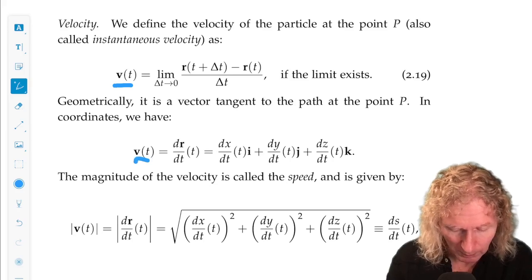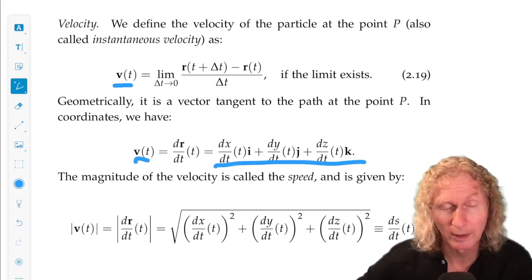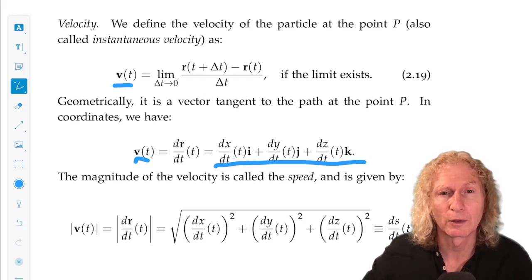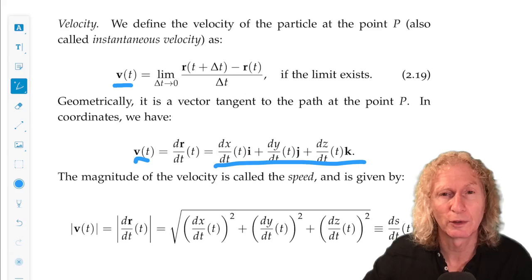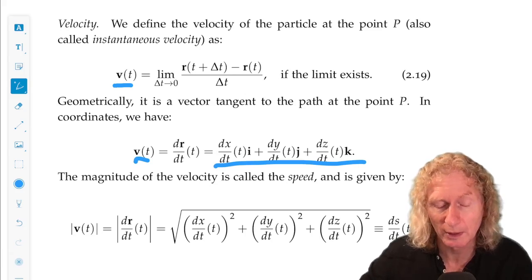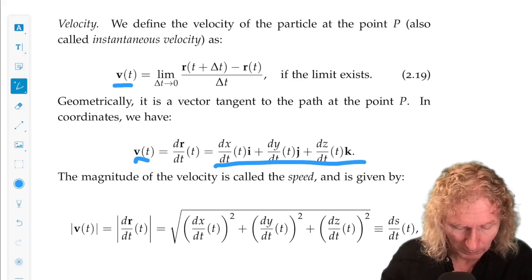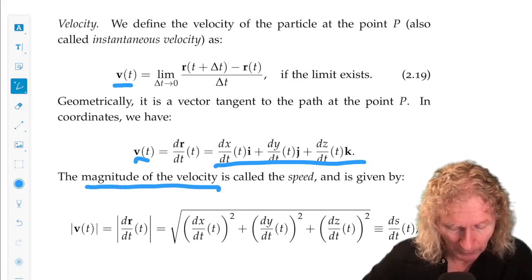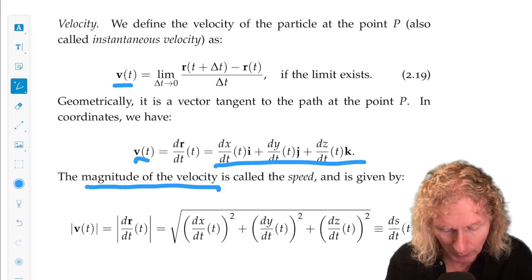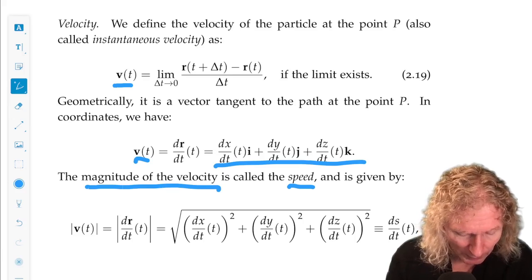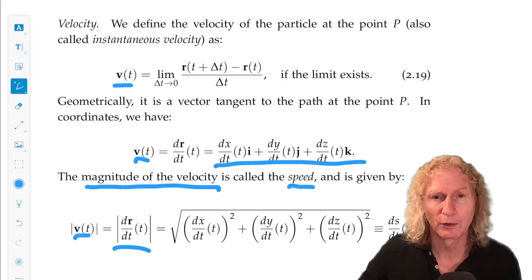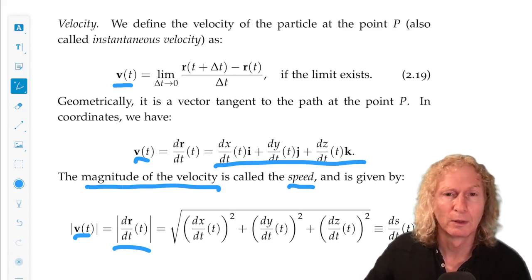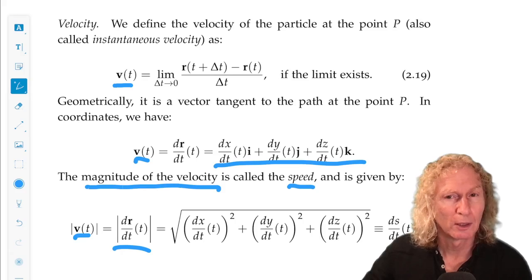So v of t is, we saw in the last lecture, how to differentiate such vector valued functions of a scalar variable expressed in the i, j, k coordinates. The magnitude of the velocity, sometimes that's just referred to as speed. And it's given by this expression, the square root of the sum of the squares of the velocity of each component.